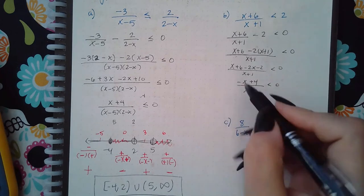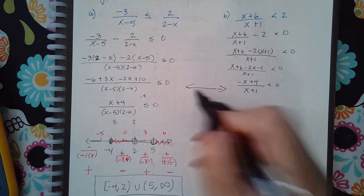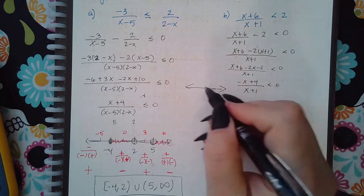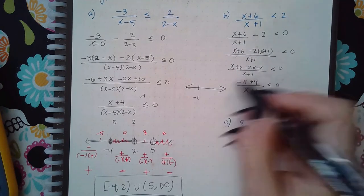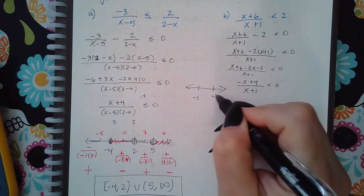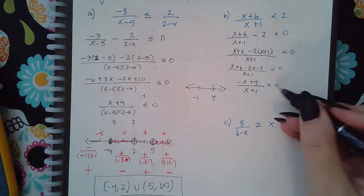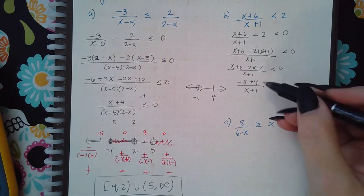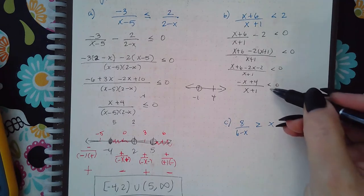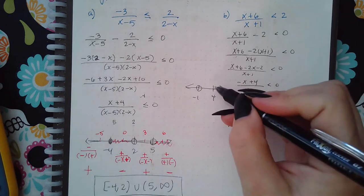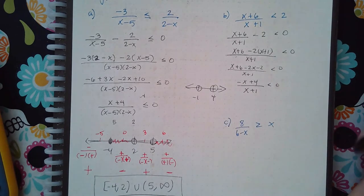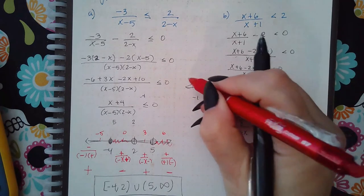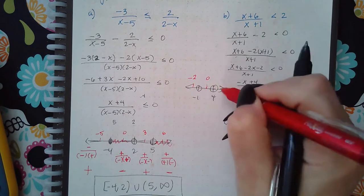When I draw my number line I'm going to have the values negative 1 and 4. The negative 1 came from the bottom so it automatically has an open dot, and the 4 follows the inequality symbol — but that also means it has an open dot because there's no bar. Then let's test negative 2, 0, and 5.